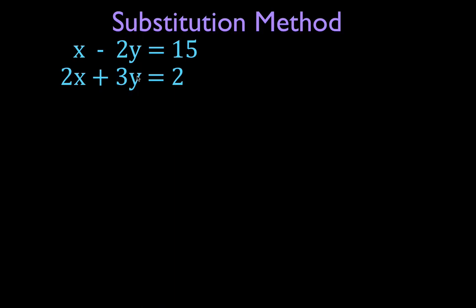With the substitution method, I like to write down one equation, I like to write down another equation, I draw a line under the two equations, and I'm going to solve one of these two equations. This is really the first step: solve one of these two equations — it doesn't matter which one — for either x or y, it doesn't matter which one. Now, you will notice in the first equation, we have simply an x right here.